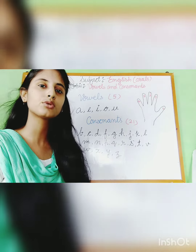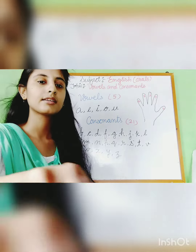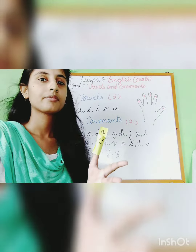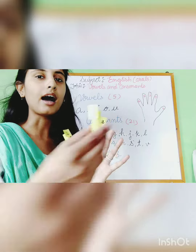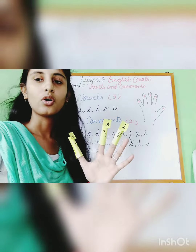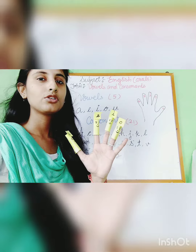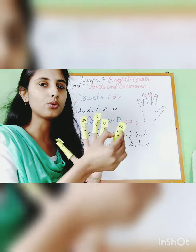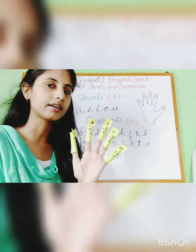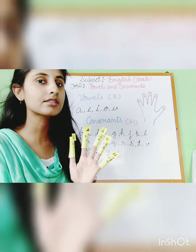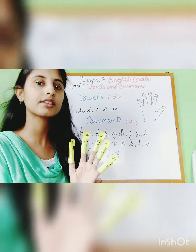Out of those 26 siblings, 5 siblings — A, E, I, O, U — used to live with their grandmother. And the rest, 21 siblings, used to live with their mother.